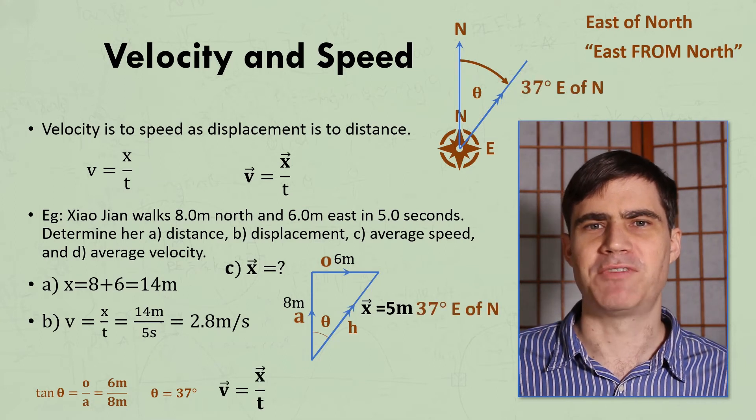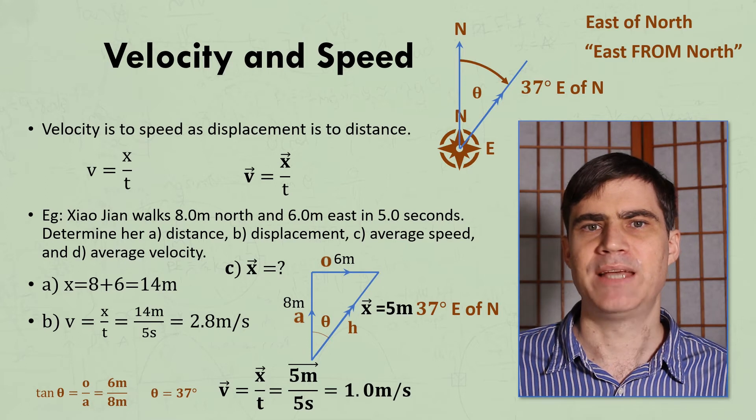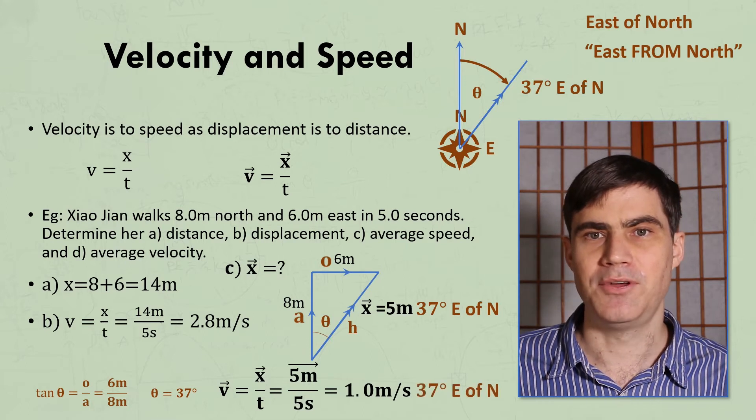Finally, for her average velocity, we use velocity as displacement over time. So it comes out at 1 meter per second. Now, this might seem a bit strange at first,